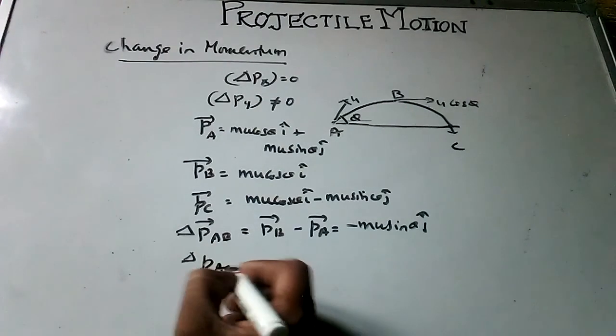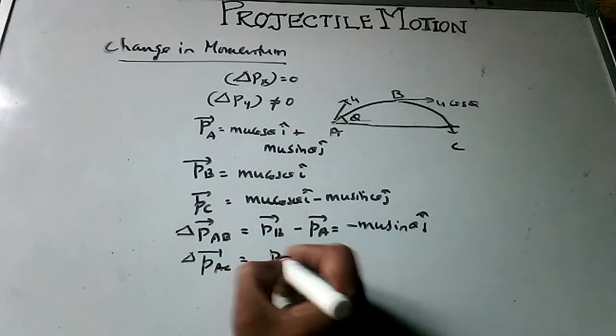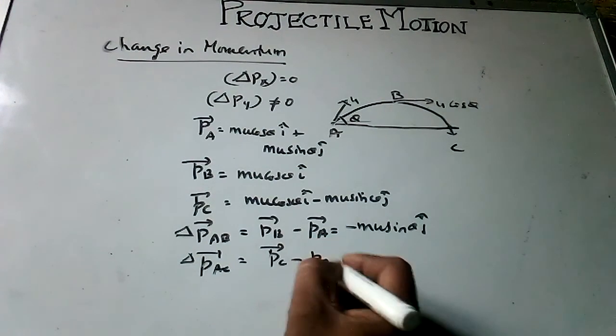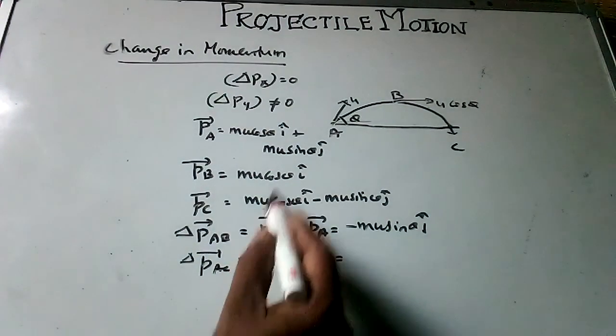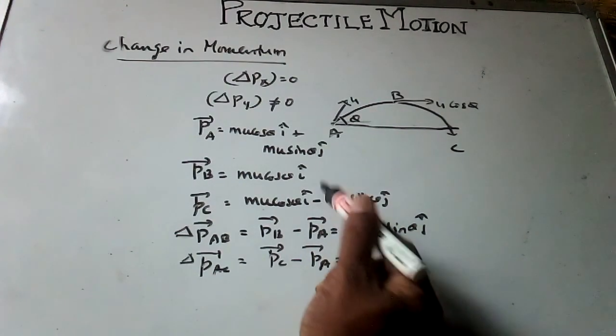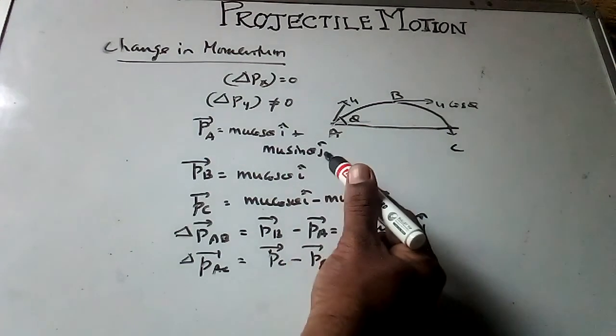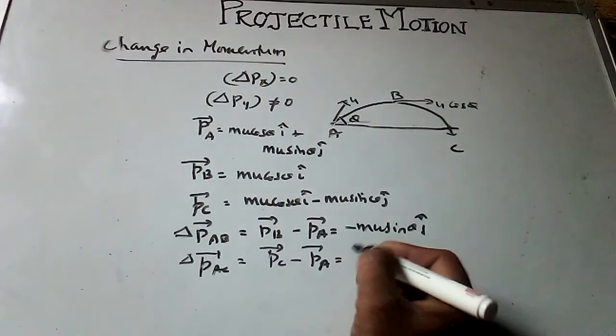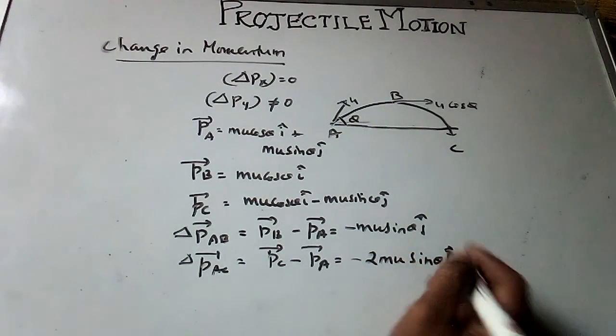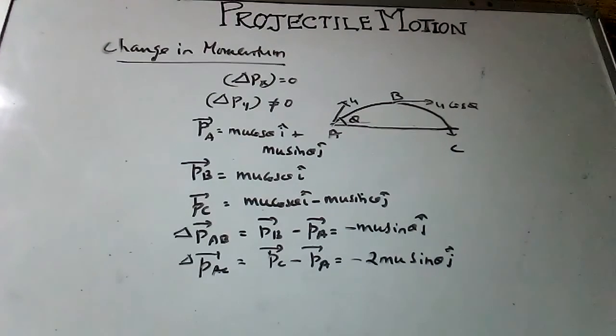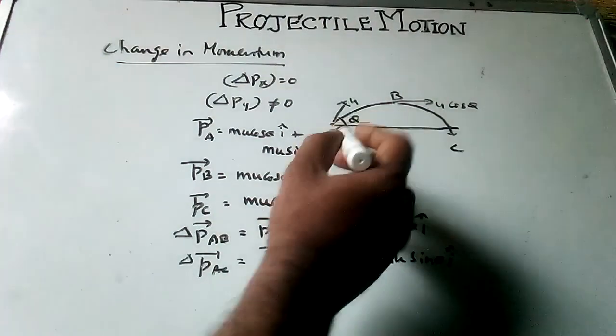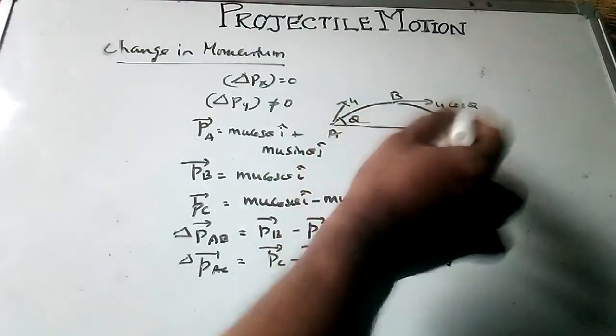Then change in momentum along AC. So mu cos theta i cap, mu cos theta i will cancel. Minus mu sin theta j minus mu sin theta j, so that minus 2 mu sin theta j cap. These are the changes in momentum at the three different points A, B, and C.